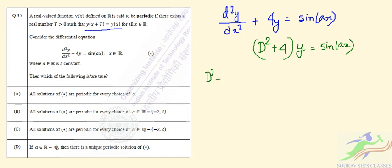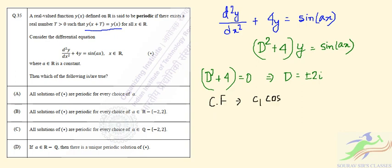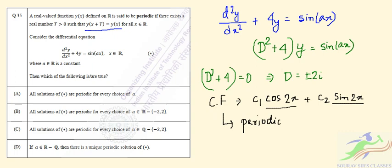Setting d² + 4 = 0 to find the complementary function gives d = ±2i. So the complementary function is CF = c₁cos(2x) + c₂sin(2x). Both cos(2x) and sin(2x) are periodic, so their sum, the CF, is also periodic.